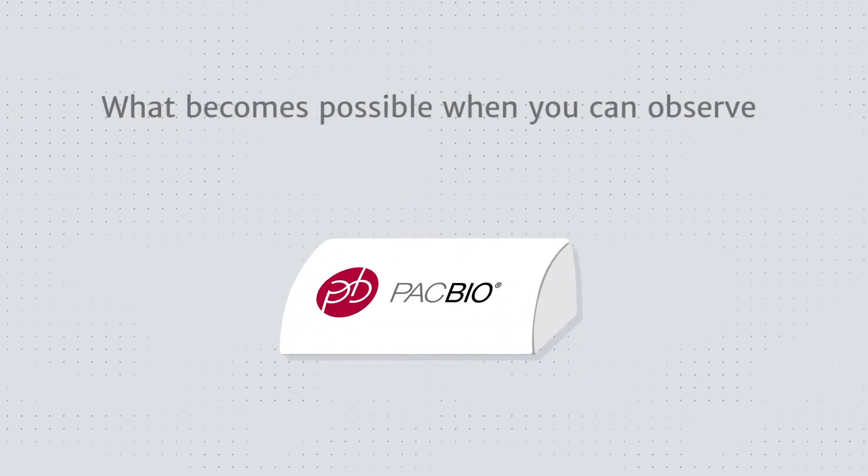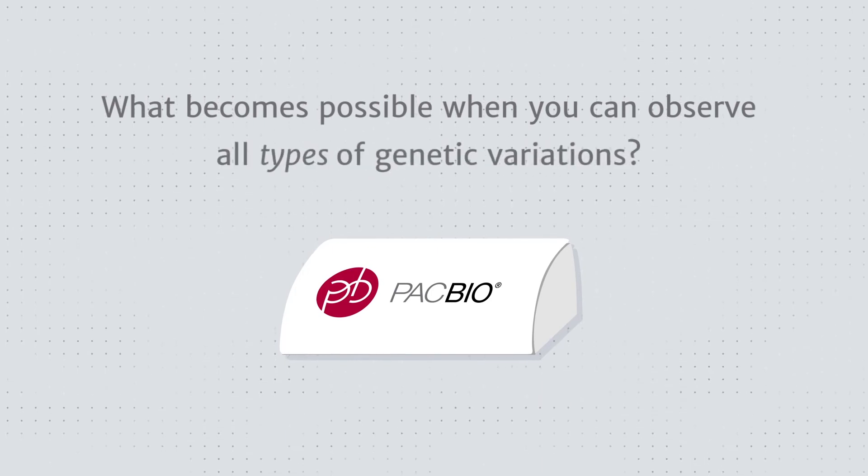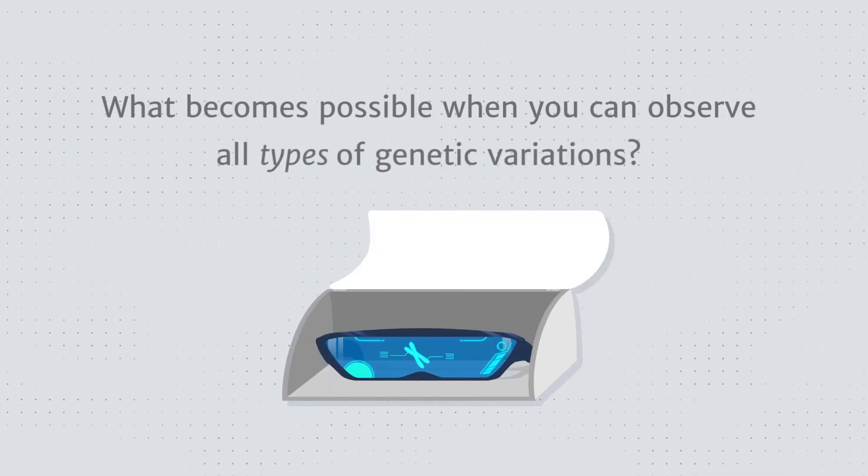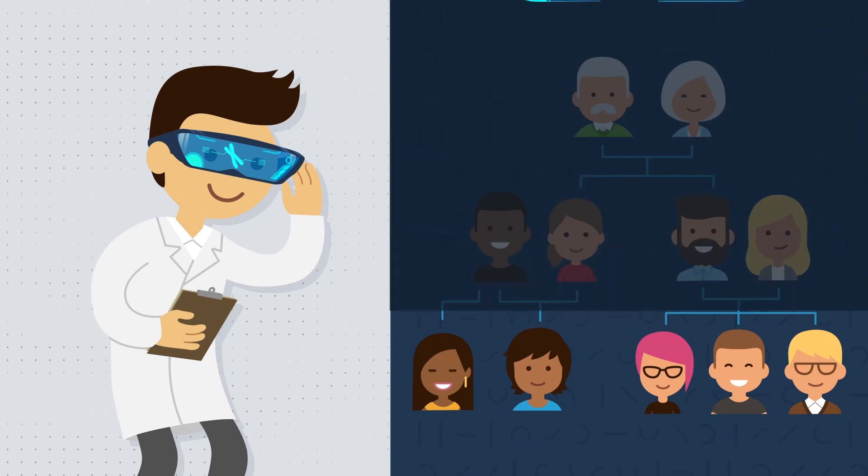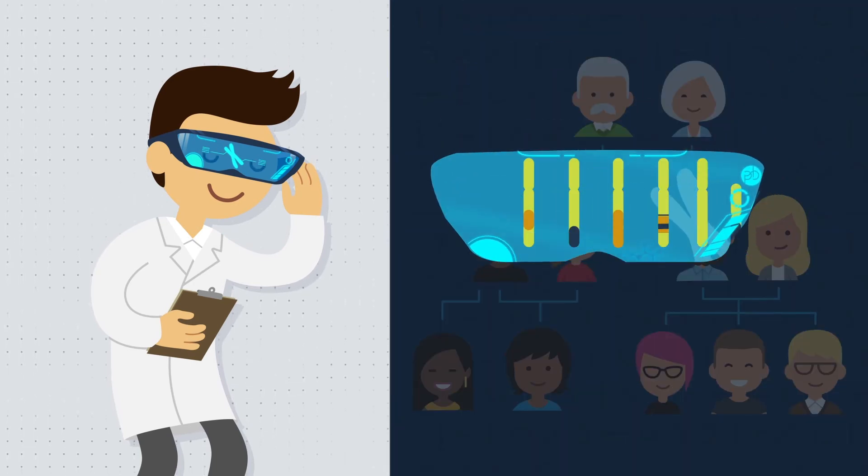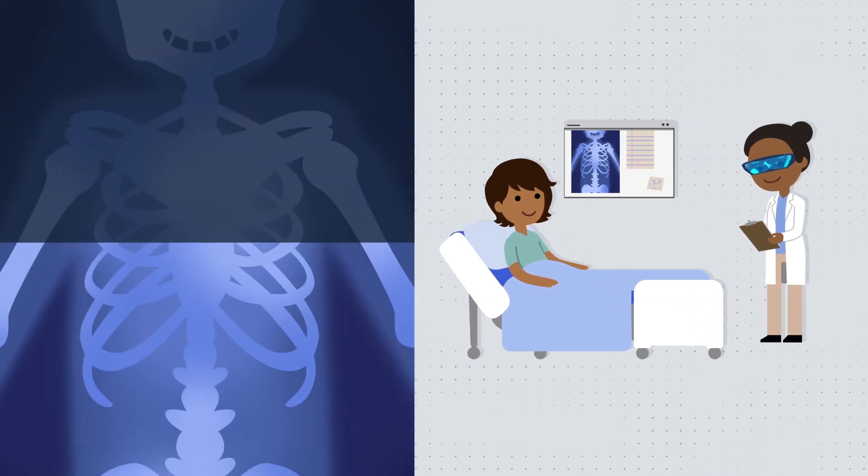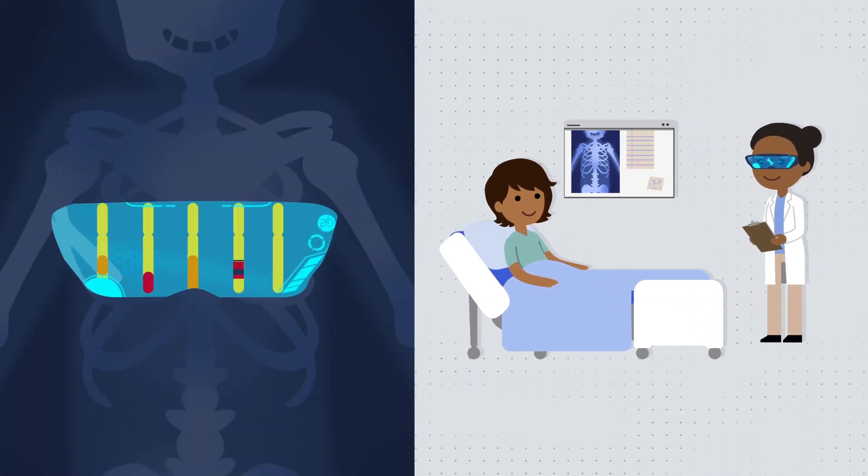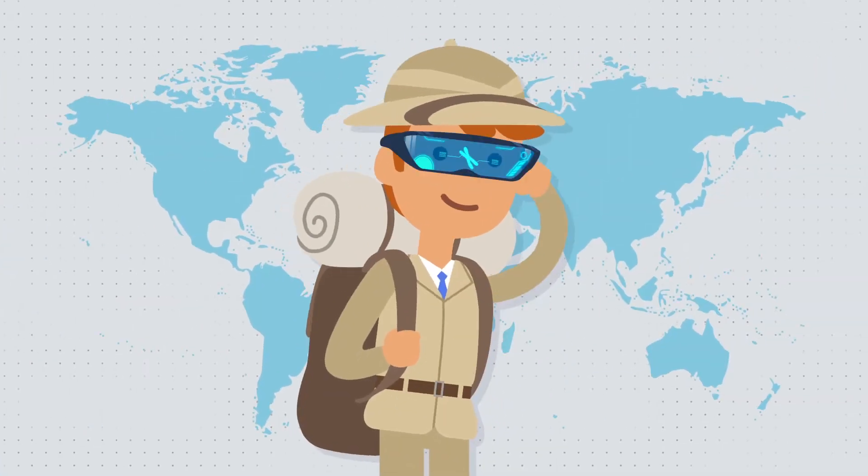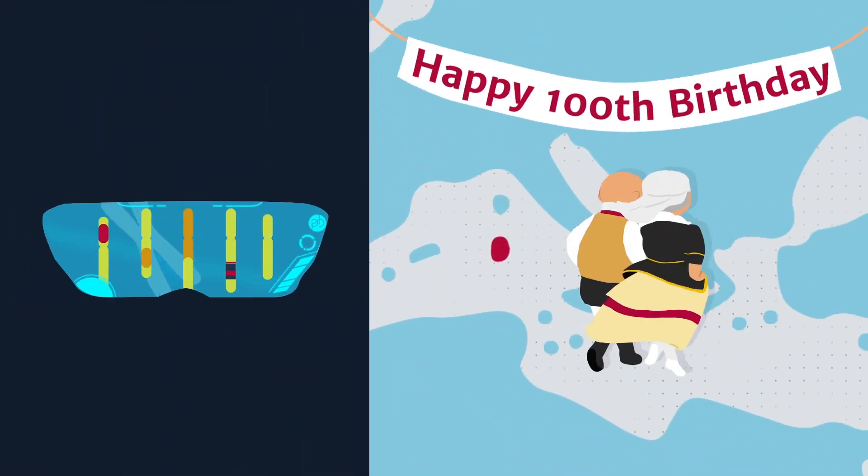So what becomes possible when you can observe all types of genetic variations? Disease researchers can discover the genes that caused previously mysterious conditions. Doctors can ultimately find mutations that explain undiagnosed diseases in their patients. And genetic researchers can uncover variations that make different populations unique.